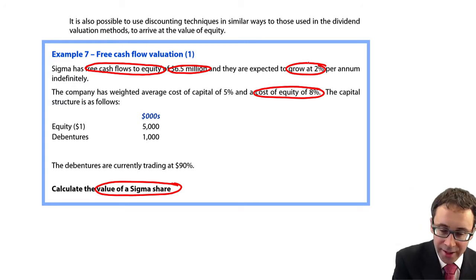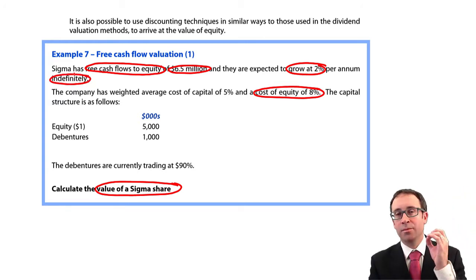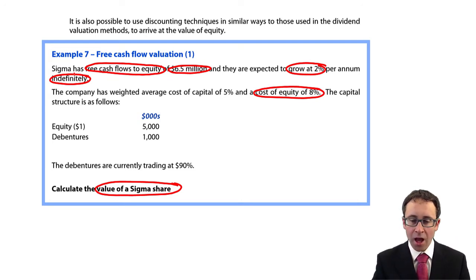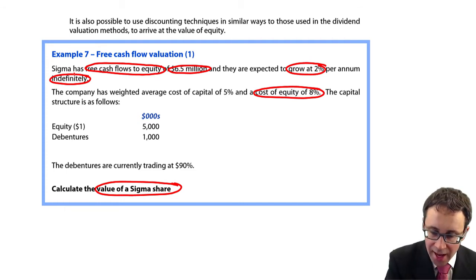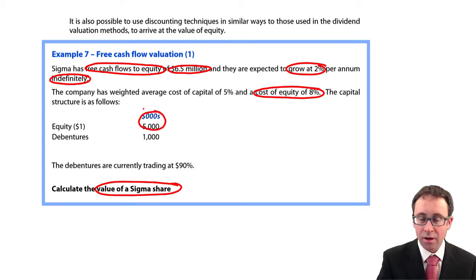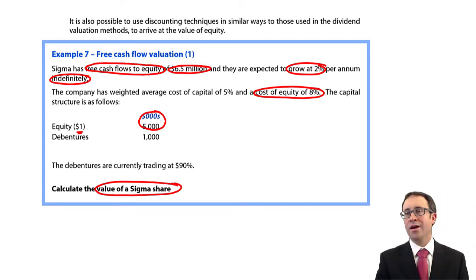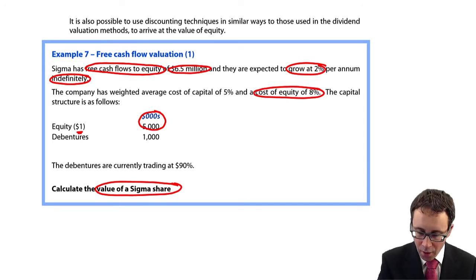We're told that those cash flows are going to grow at 2% per annum. Although they're growing indefinitely to infinity, it is a perpetuity, but it is an inflating perpetuity, so we need to incorporate the growth into our calculations. We're told the capital structure there. In terms of equity, there is 5 million dollars worth of equity in the books. Be very careful. I haven't made it tricky here, but here they are $1 shares. That's the par value. So there are 5 million equity shares in issue.